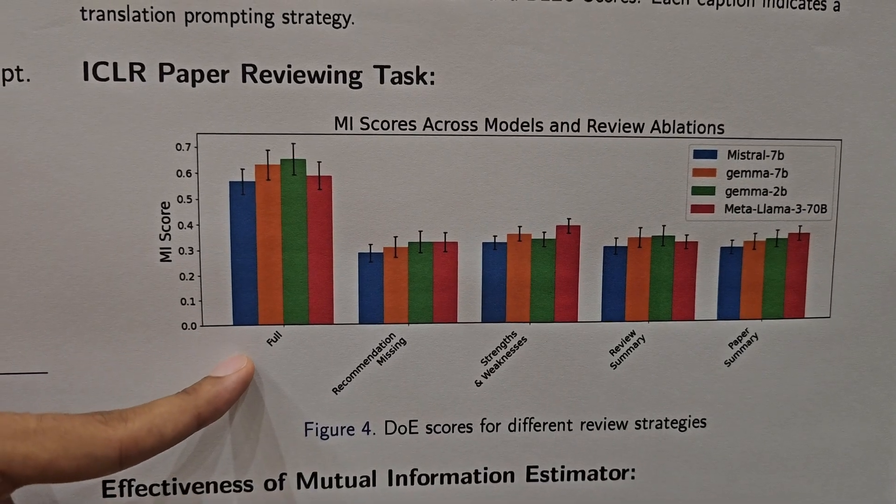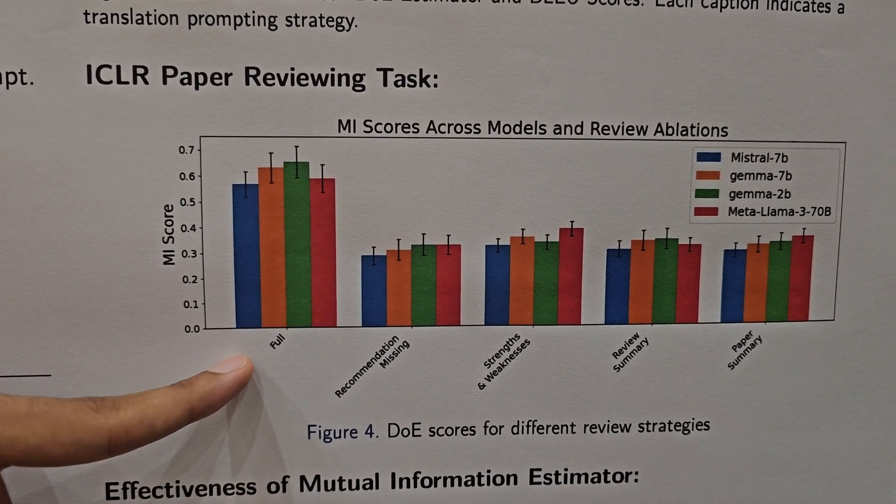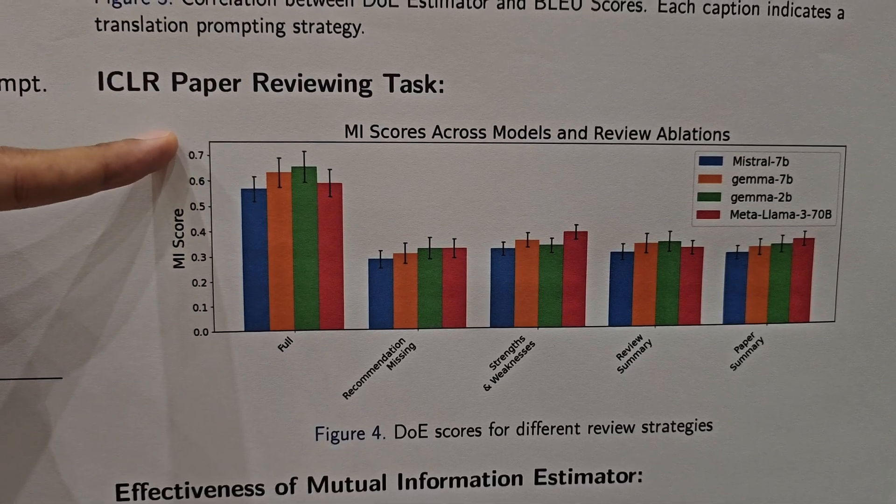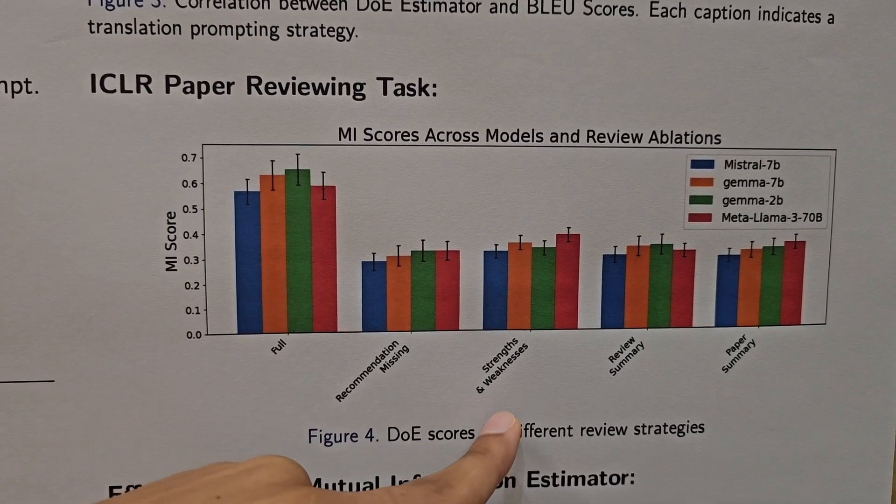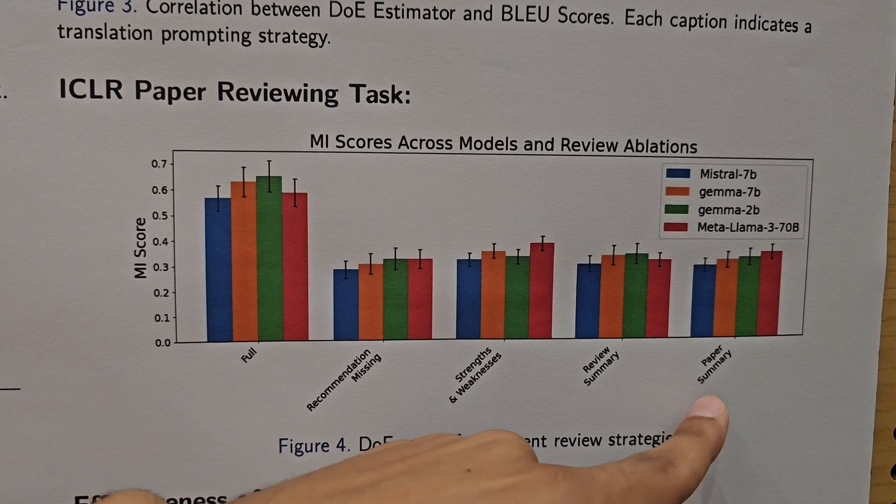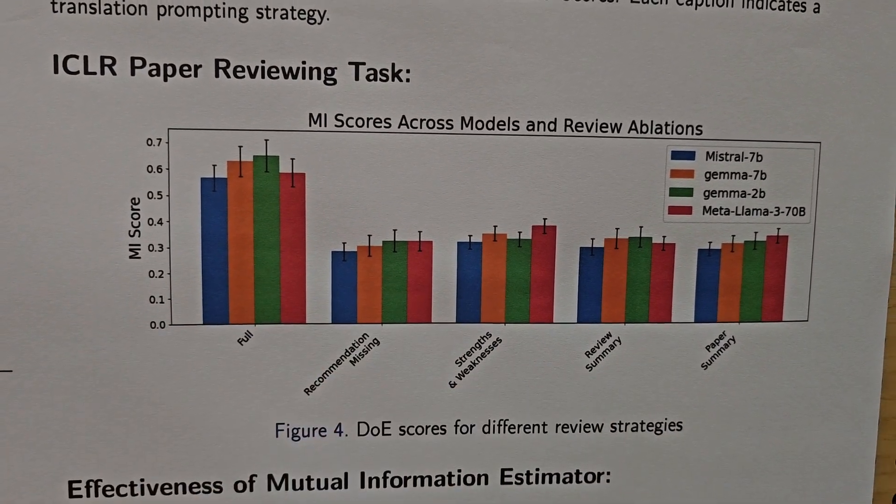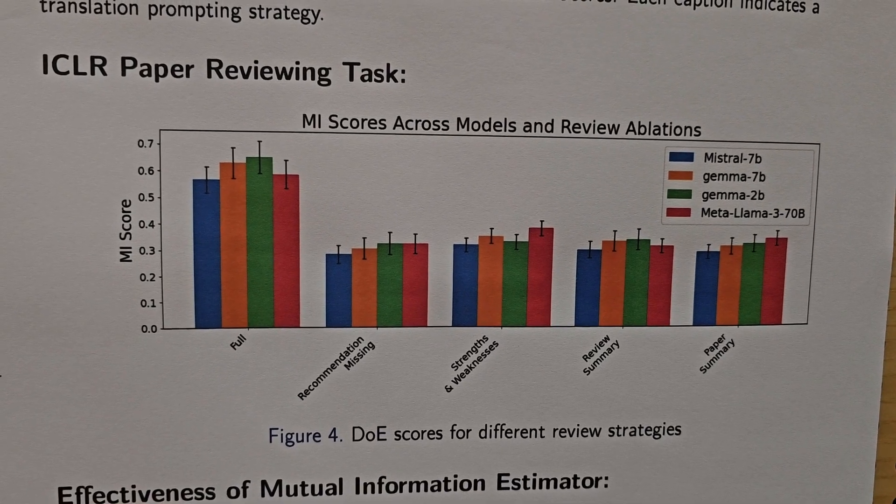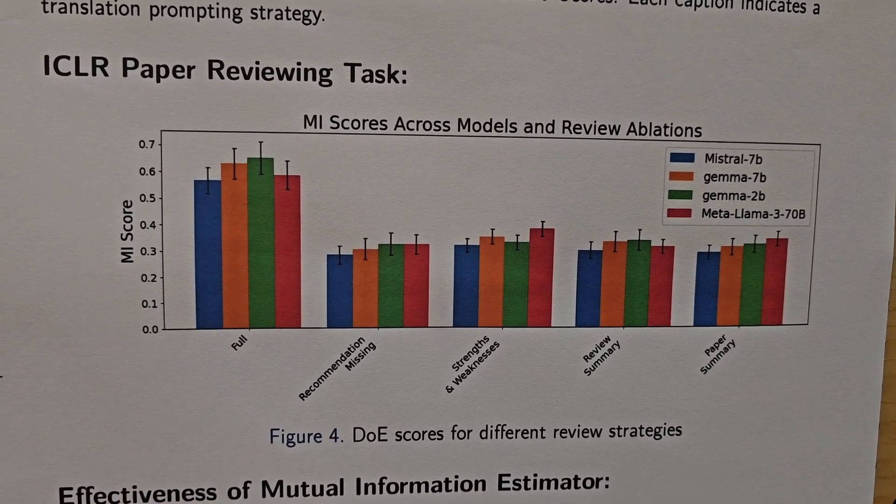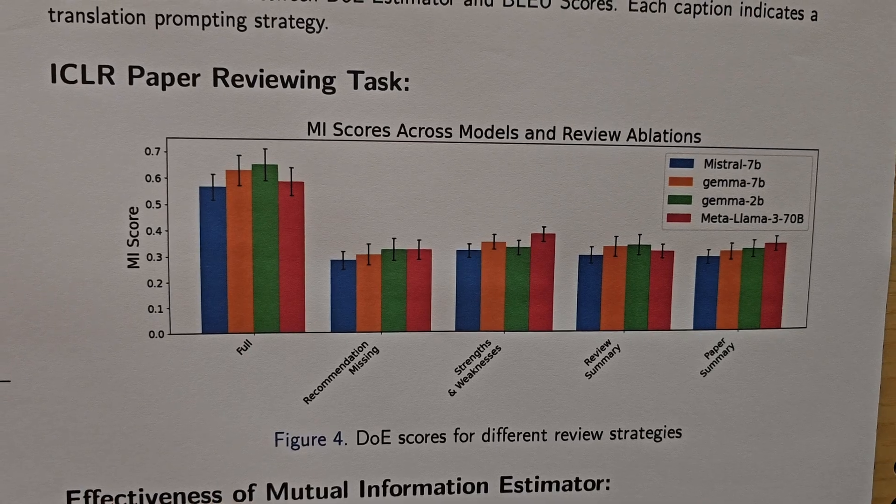In the full review we see that our score is the highest. Whereas in these other cases where the entire review is being only partially done, our mechanism is scoring those lower. This shows that our mechanism is able to detect lower effort or unfaithful reviews without ground truth.